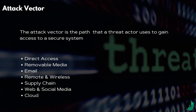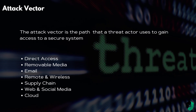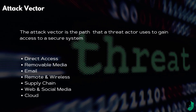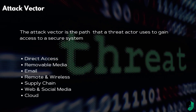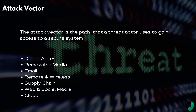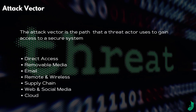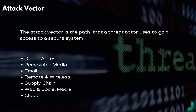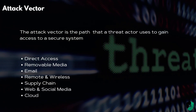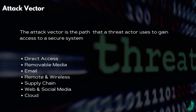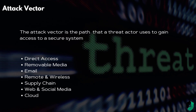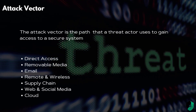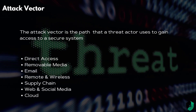The attack vector is the path that a threat actor would use to gain access to a secure system, and there are several of them: direct access, removable media, email, remote and wireless, supply chain, web and social media, and of course the cloud. Let's take a look at them one by one.